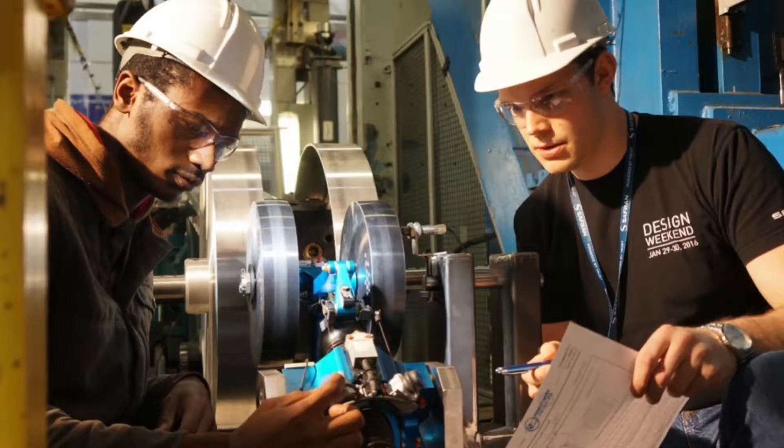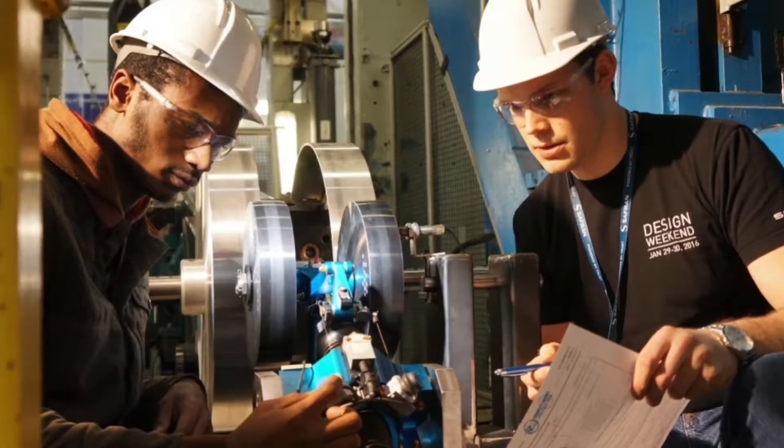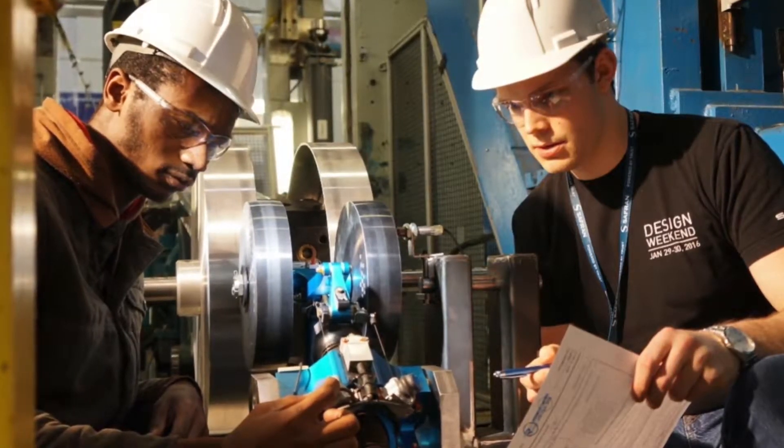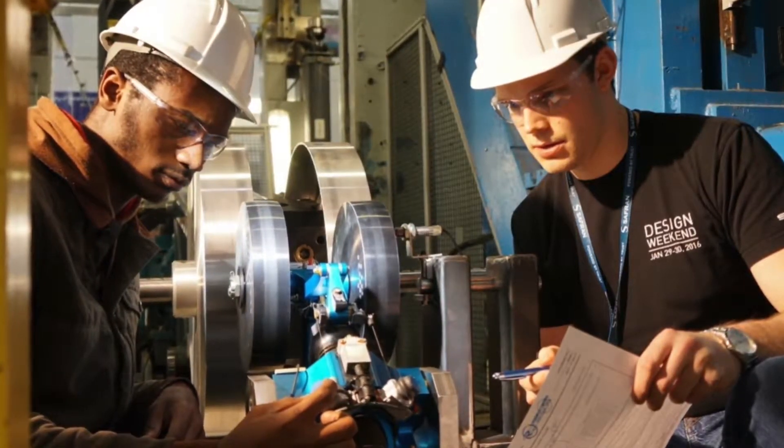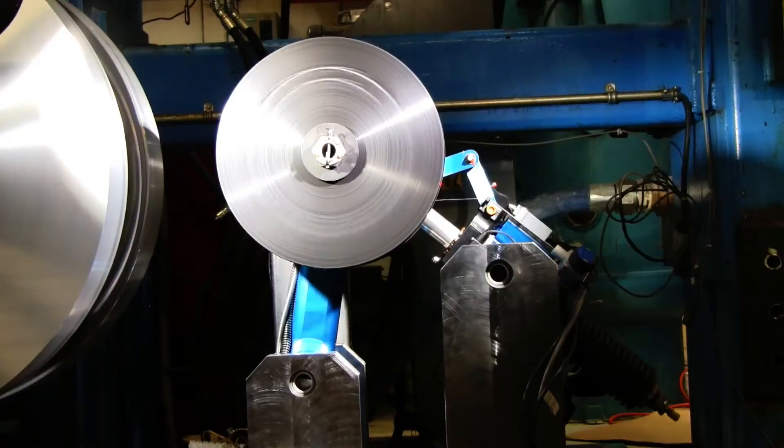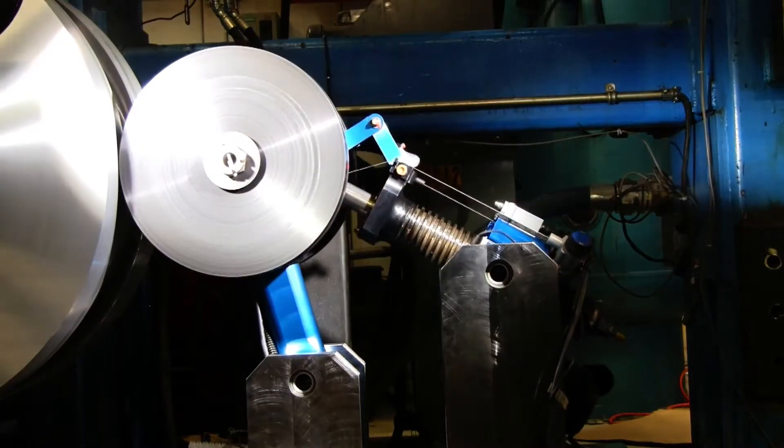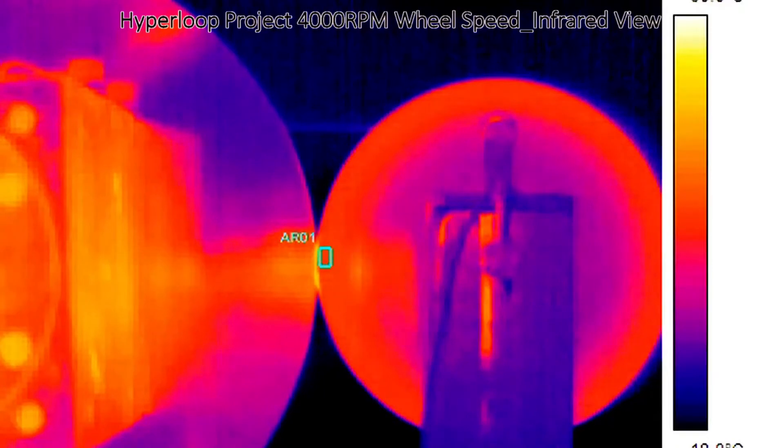As you can see here, Graham and I tested the Hyperloop deployable wheel system on a test rig facility. This same facility is being used to test various aircraft landing gear systems, and we were fortunate to have the opportunity to test our deployable wheel system in such a facility.